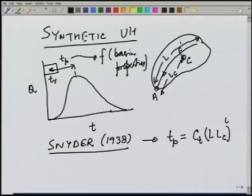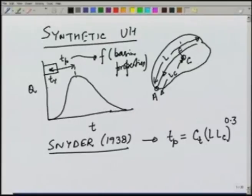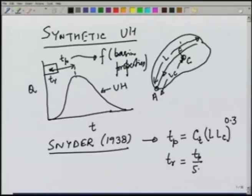Using these two parameters: L denotes the size of the basin (larger L means larger basin), and LC represents the shape. If the basin is wider near point A, LC is smaller; if wider away from A, LC is larger. Snyder found that the time to peak TP from the center of the rainfall is related to the product L times LC to the power 0.3. For any catchment, if we know L and LC from a topographic map, we can find TP for a unit hydrograph of duration tr, where tr is related to TP as tr = TP / 5.5.